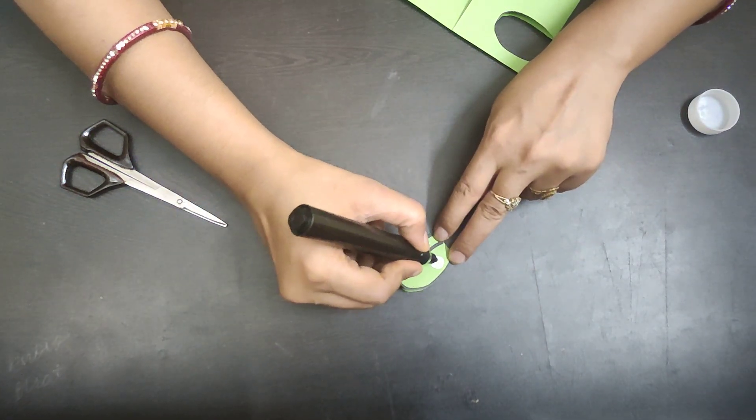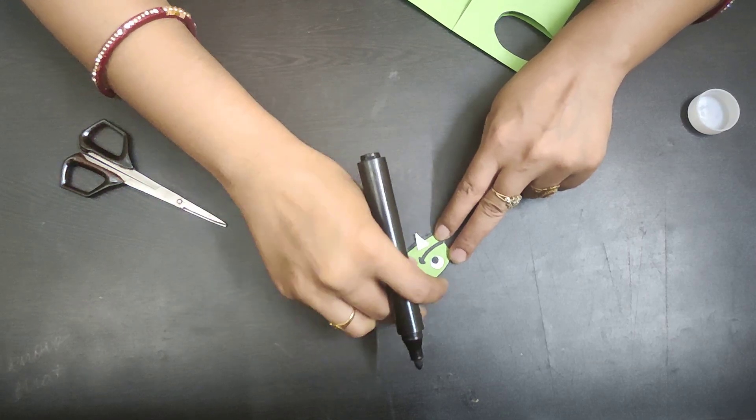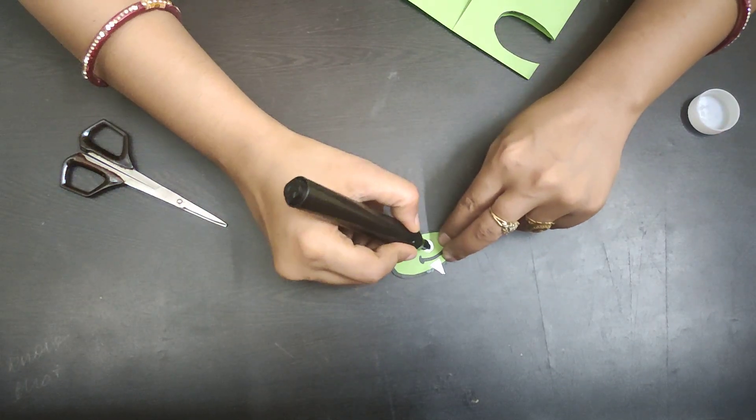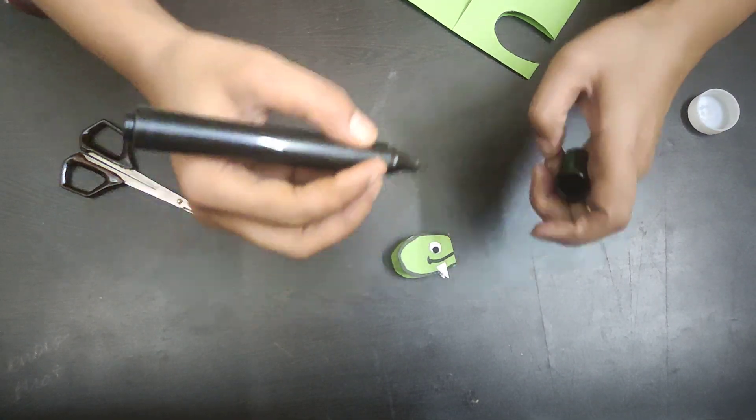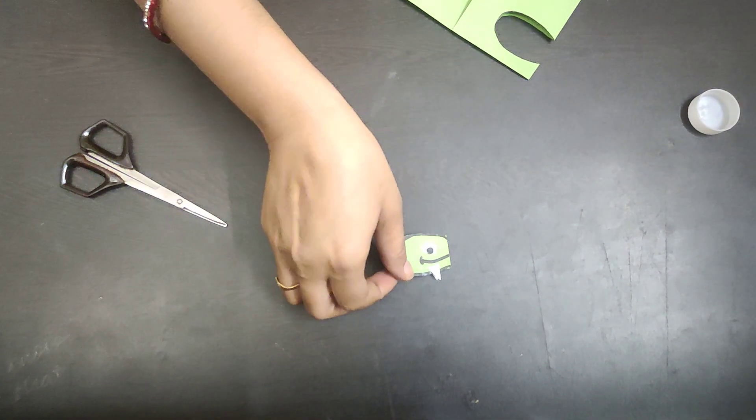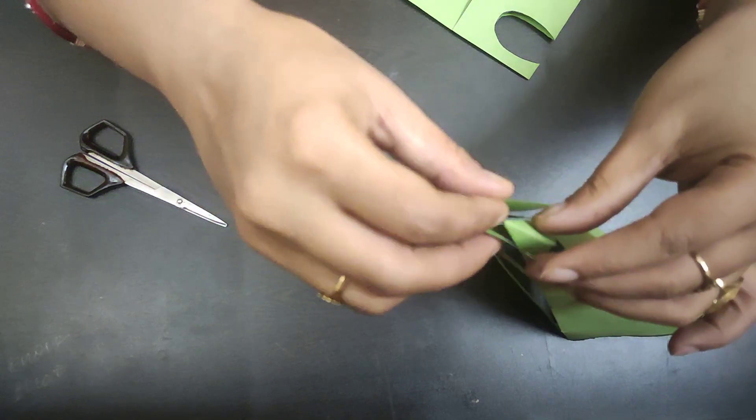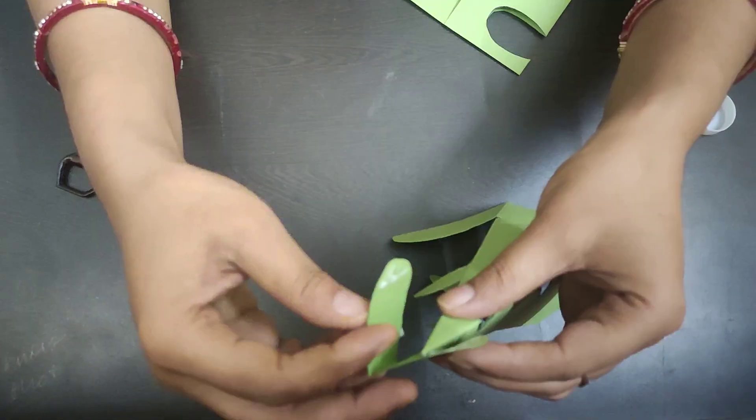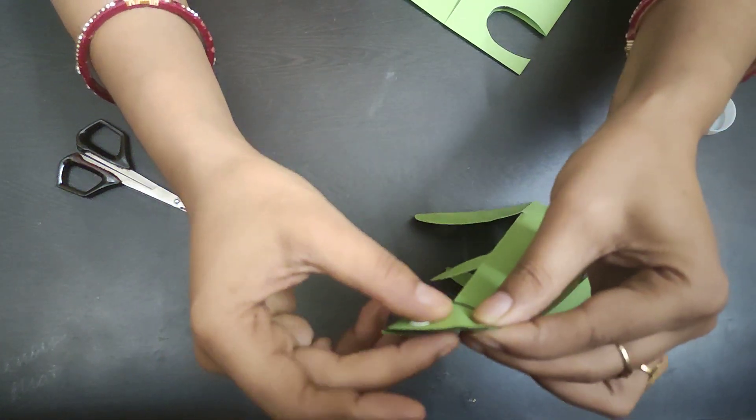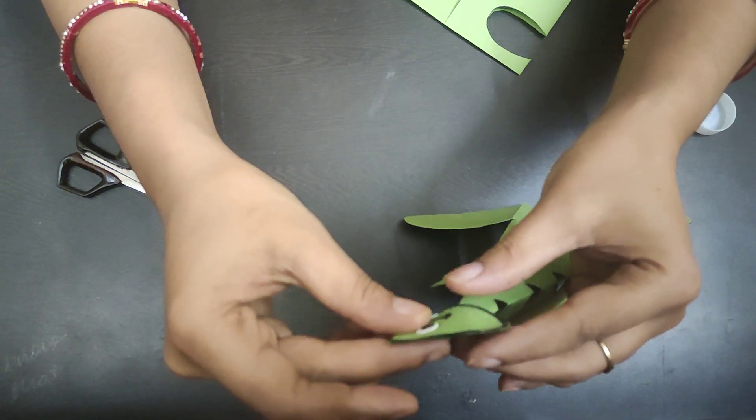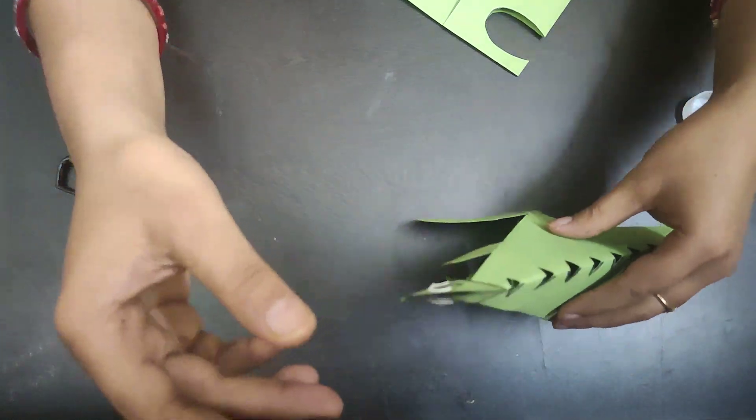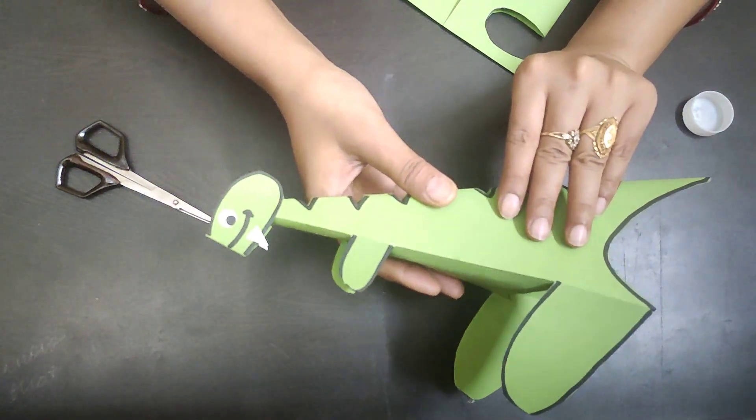Now make eyes with the help of marker on both sides and paste it. Paste the face with the body. This part will be added along this. Paste it along the side. Your dinosaur is ready. Thank you.